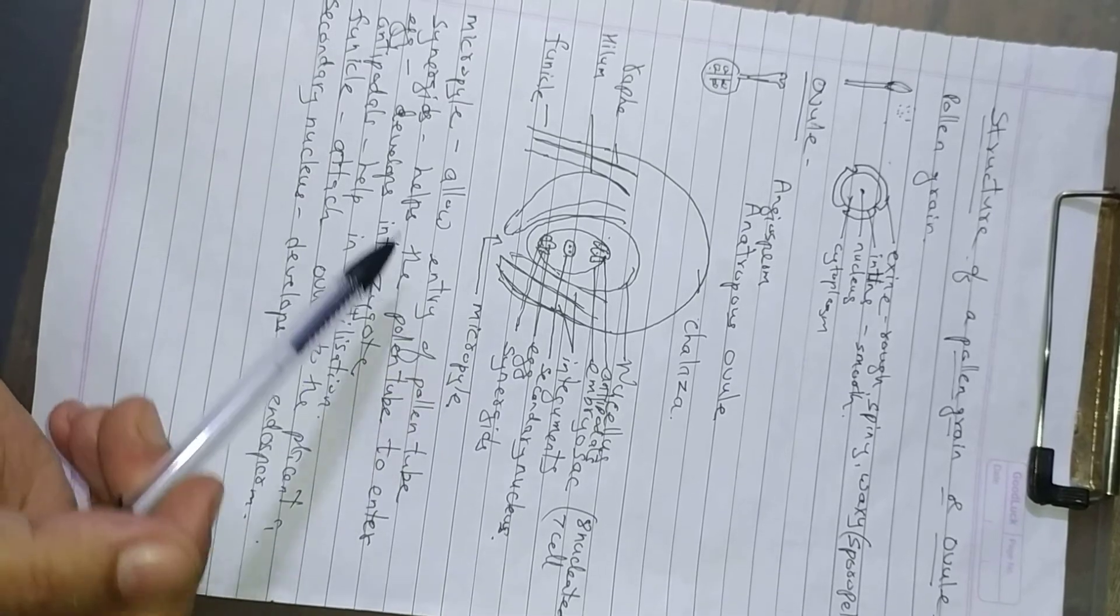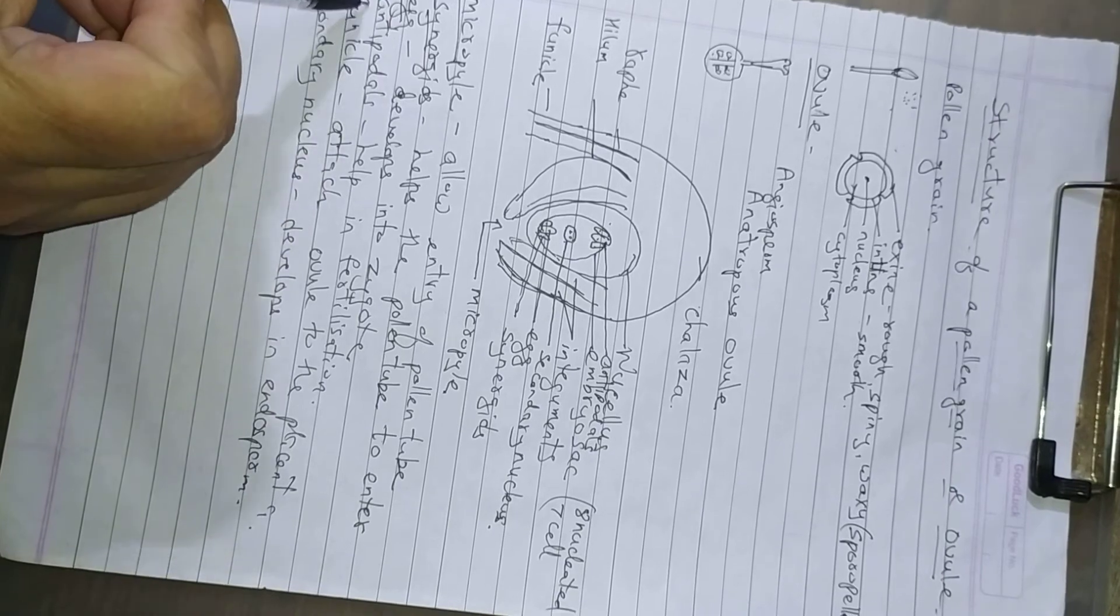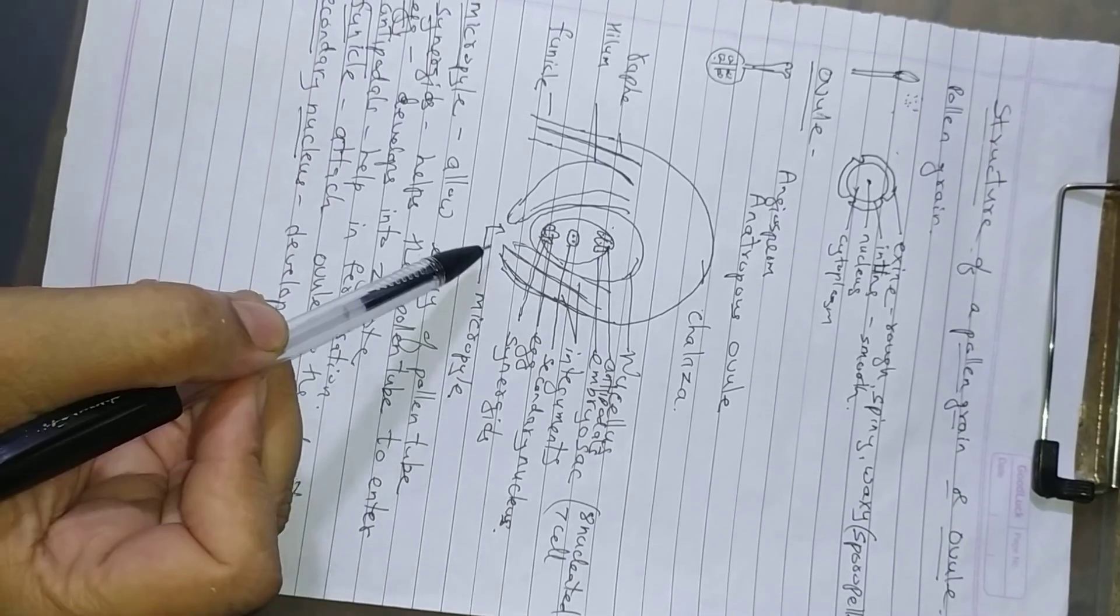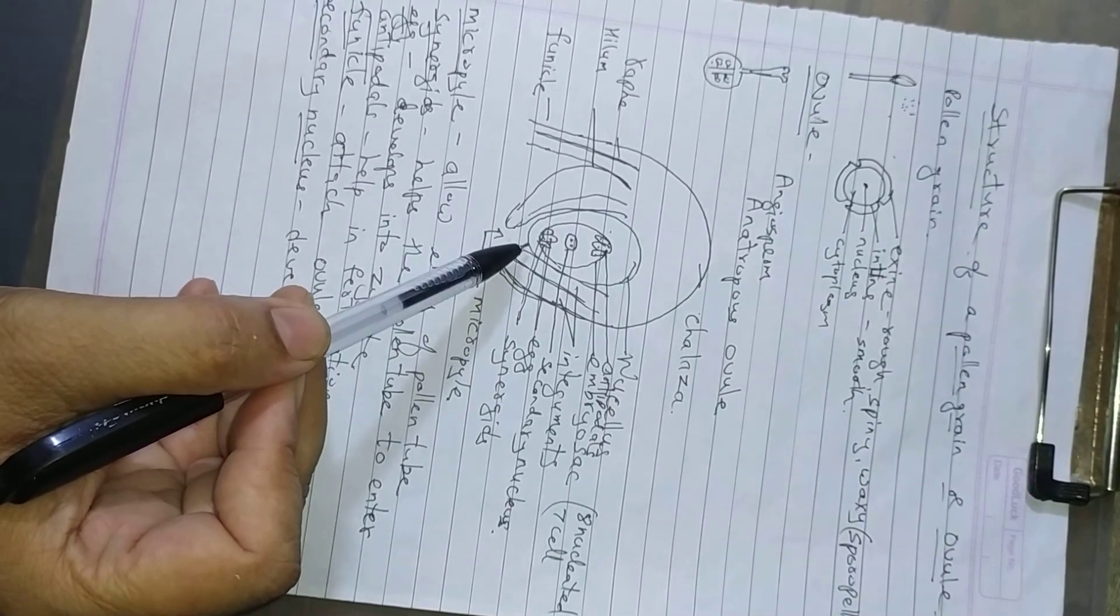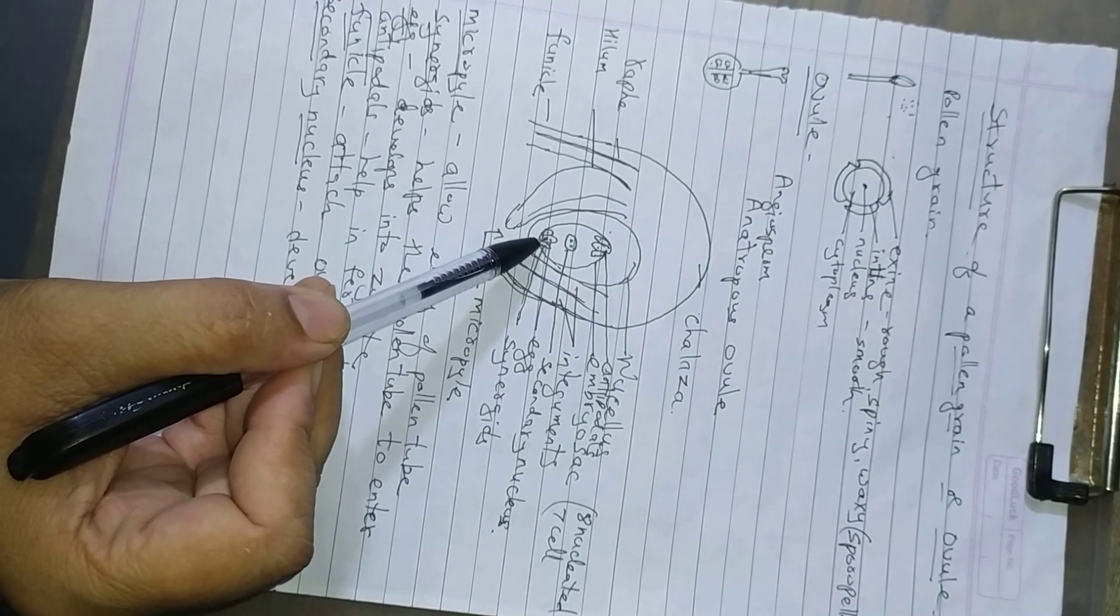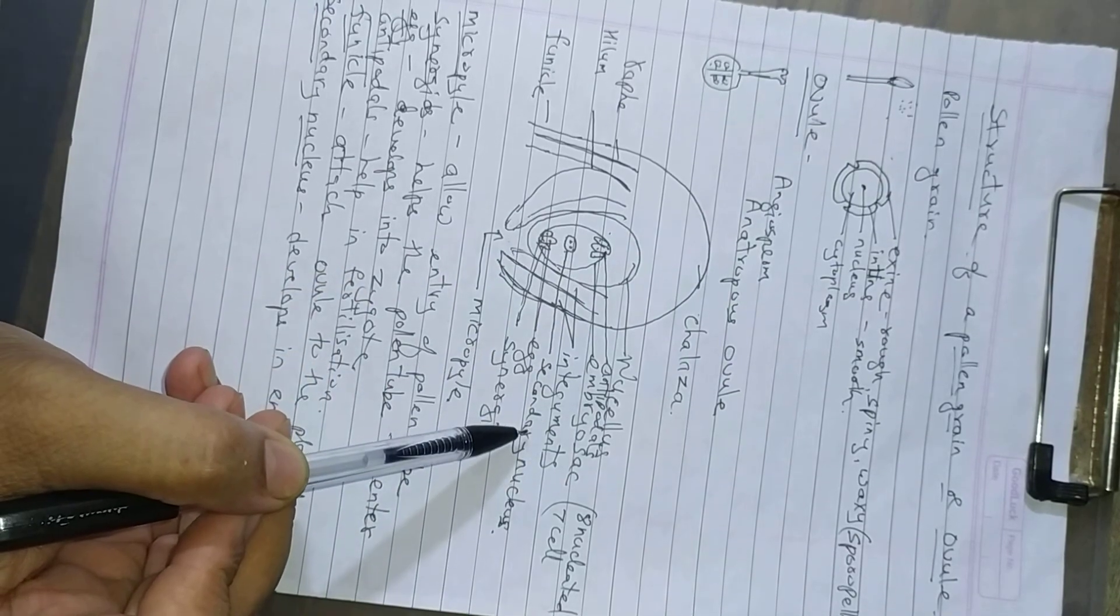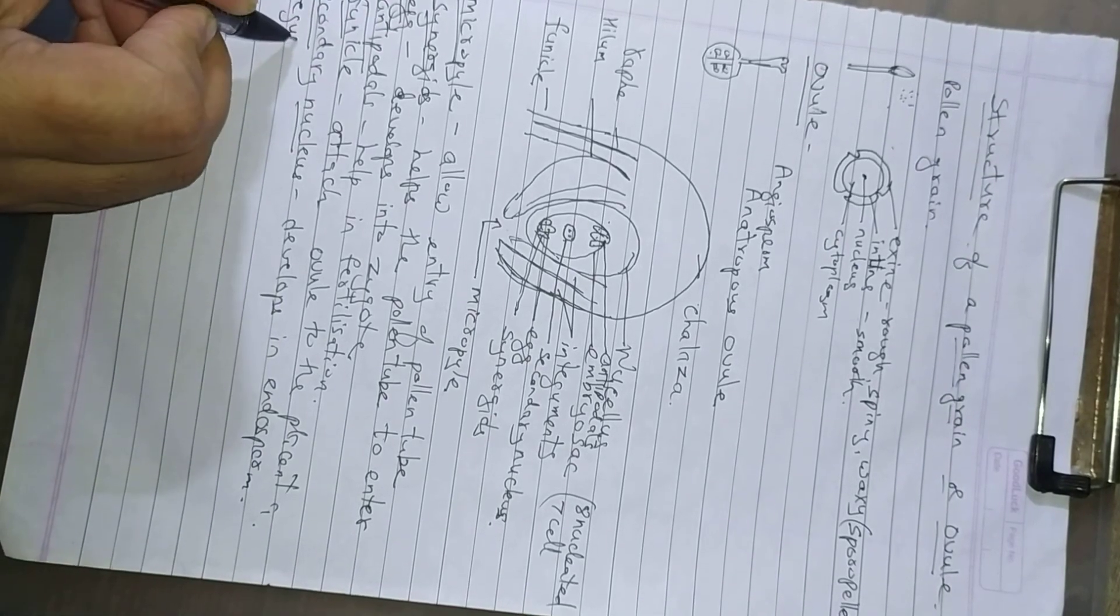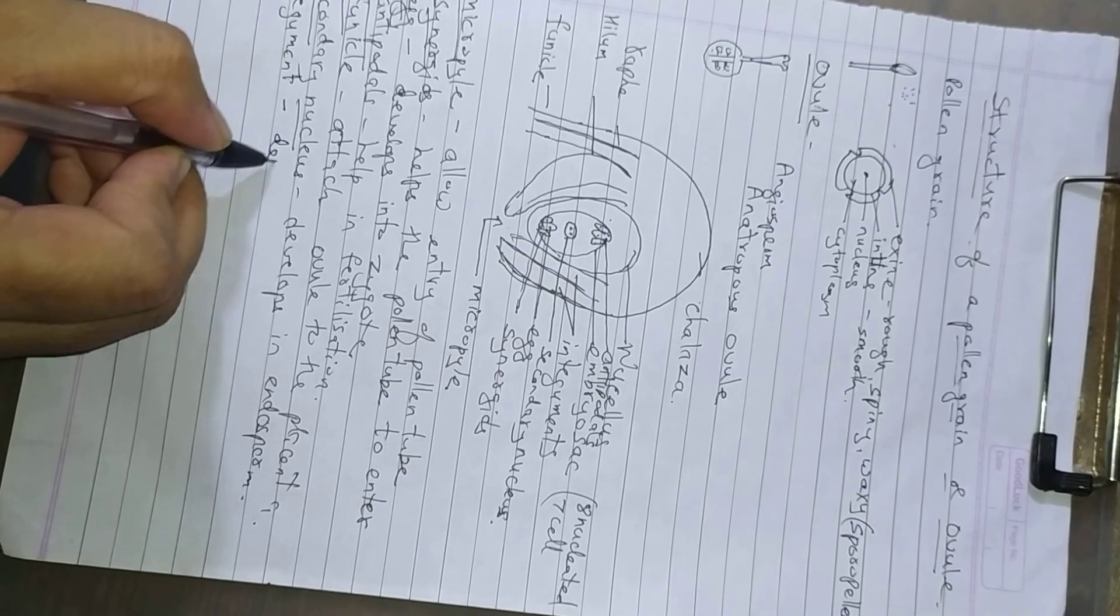We have seen the functions of the micropyle, synergids, egg, antipodals, funicle and the secondary nucleus. Micropyle is the opening that allows the entry of the male gamete, allows the entry of the pollen tube. The egg develops into the zygote. Secondary nucleus develops into the endosperm. And the integuments, outer integument and the inner integument, they develop into seed coat.